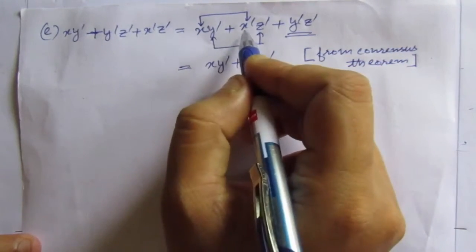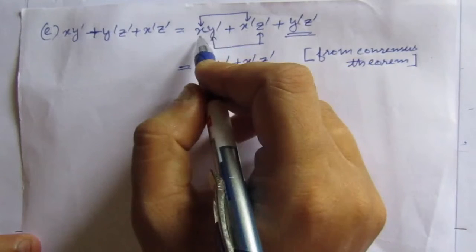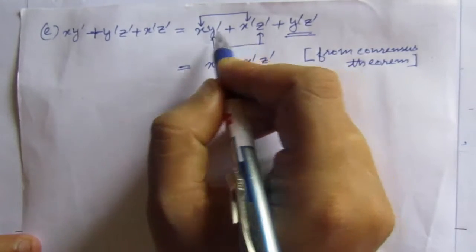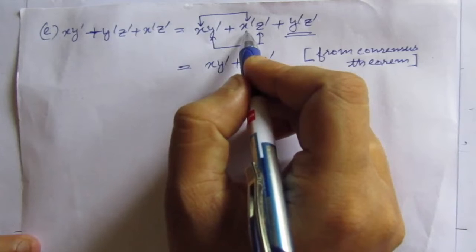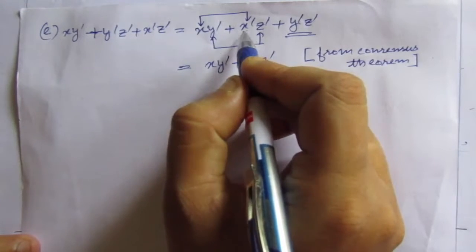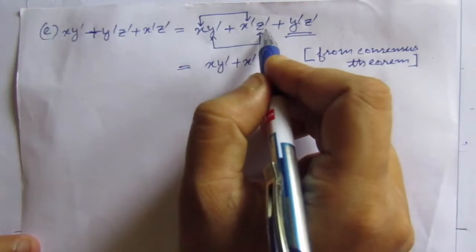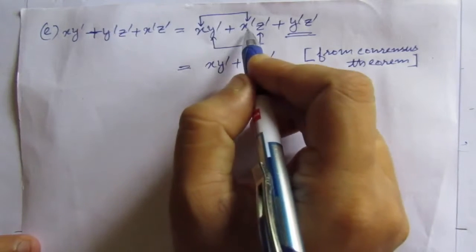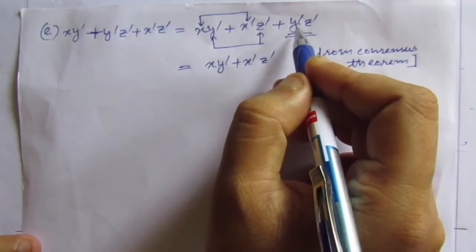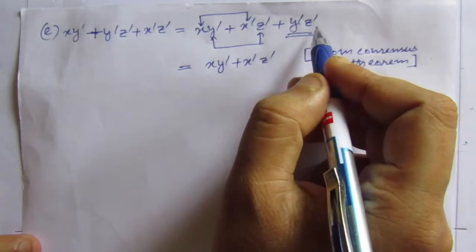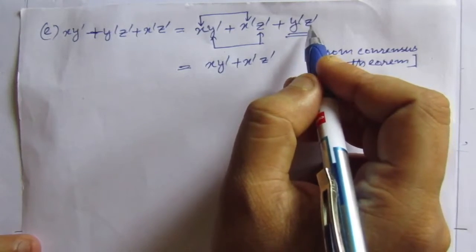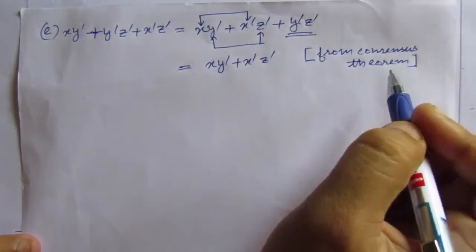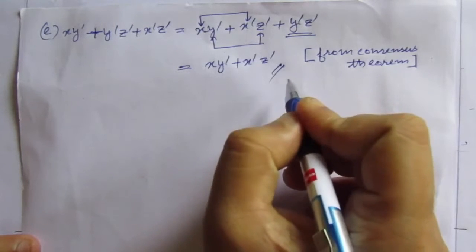By the consensus theorem, if the first and second terms contain a normal variable and its complement — x and x̄ here — and the remaining factors ȳ and z̄ are already multiplied into those two terms, then we can delete the third term. So xȳ + x̄z̄ is the minimized result.